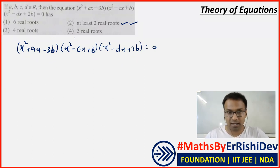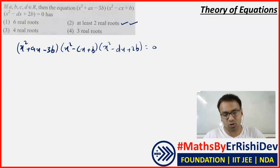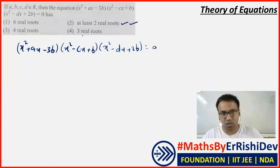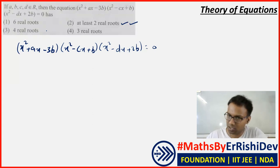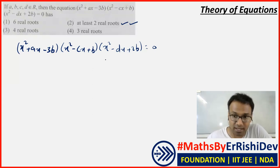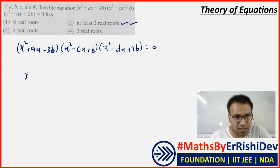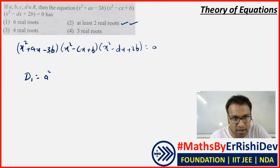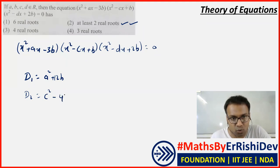Obviously, for all three discriminants to be greater than zero, the roots will be real. The options themselves are also a hint in such good questions. Since we're talking about real roots, we only need to check discriminants. Let D1 = a² + 12b for the first equation, D2 = c² - 4b for the second, and D3 = d² - 8b for the third.